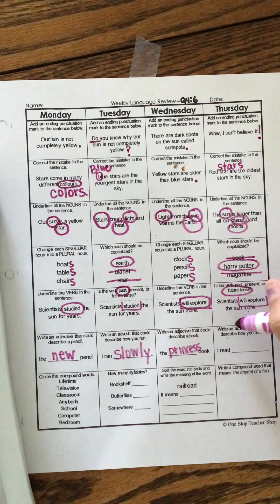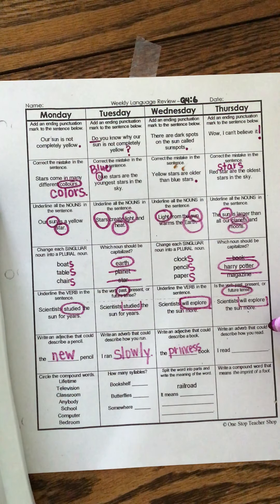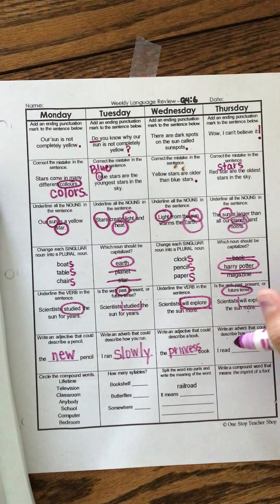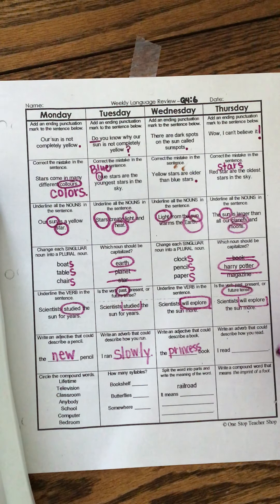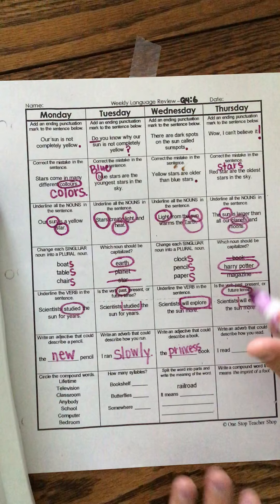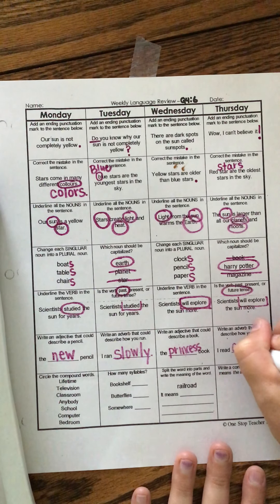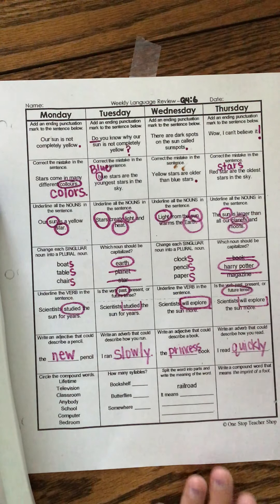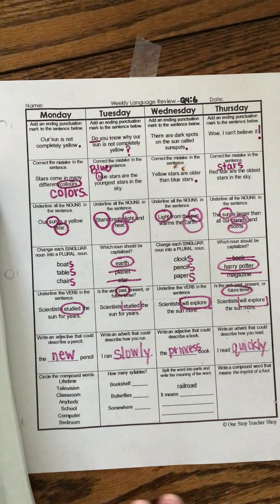Write an adjective, or excuse me, write an adverb that could describe how you read. Hmm. I read blank, or it could be how you read. So I'm going to say I read quickly because I didn't get that question out all the way. I read quickly.